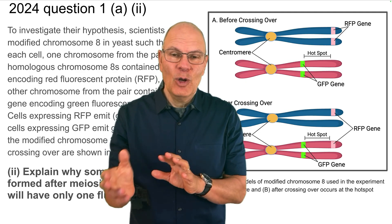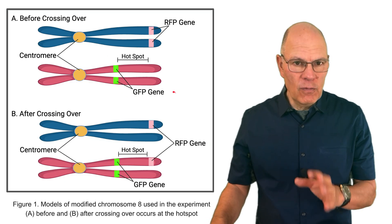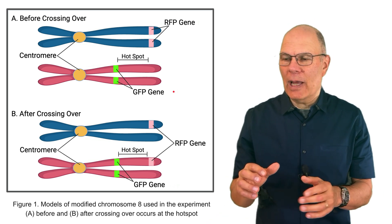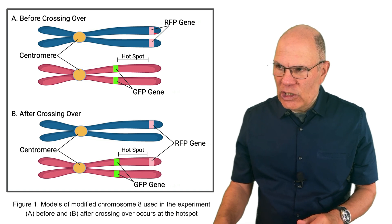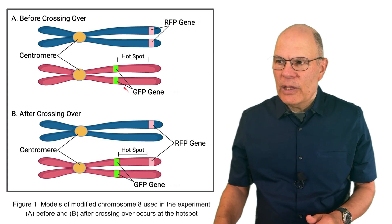Here's more introductory text for question 1a, part 2. To investigate their hypothesis, scientists modified chromosome 8 in yeast such that in each cell, one chromosome from the homologous pair contained the gene encoding red fluorescent protein (RFP), while the other contained the gene encoding green fluorescent protein (GFP). Cells expressing RFP emit red light and cells expressing GFP emit green light. Models of the modified chromosome 8 before and after crossing over are shown in figure 1. Before crossing over, there are two RFP genes on each sister chromatid of one chromosome, and two GFP genes on the other. After crossing over, the positions of these markers change.